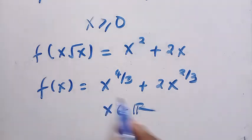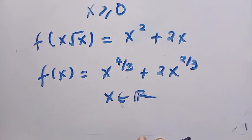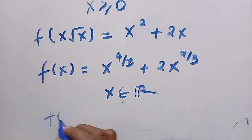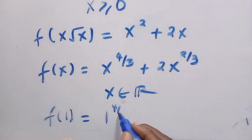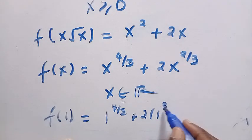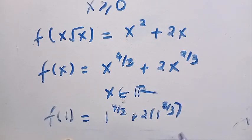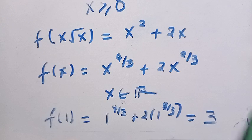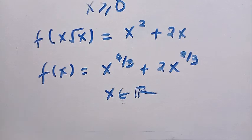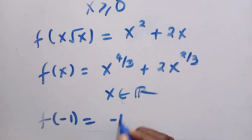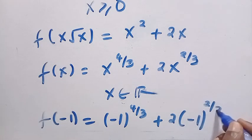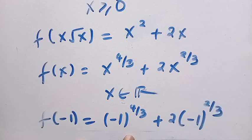Including positive and negative values. For instance, if we substitute x equals 1, we get f of 1 equals 1 raised to the power of 4 over 3 plus 2 times 1 raised to the power of 2 over 3, which equals 3. If we try a negative value, suppose x equals negative 1, we have f of negative 1 equals negative 1 to the power of 4 over 3 plus 2 times negative 1 to the power of 2 over 3. We can check this and we will get a result that is not complex.